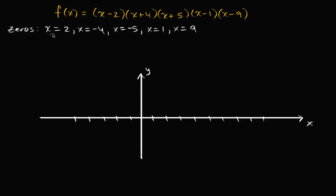Now let's just plot these. When x equals two, f of two we already know is zero. If you input two here, then this expression is going to be zero — zero times a bunch of stuff is zero. So the point two comma zero is going to be on the graph of y equals f of x. So x equals two is a zero — it makes our function equal to zero, and it gives us the x-intercept at two comma zero.